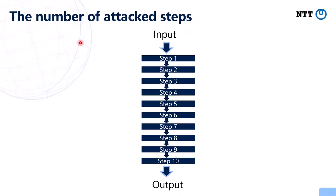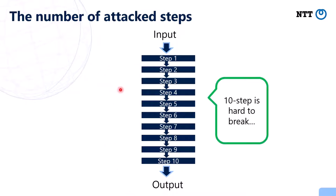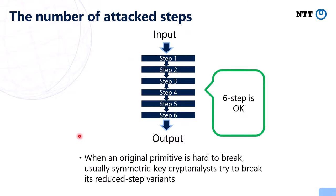Next, I would like to explain about the number of attacked steps. Usually, a hash function is made from a smaller primitive such as a compression function or permutation. Such a compression function or permutation iterates many steps. Suppose a compression function iterates 10 steps. Then it is very hard to find a valid collision attack on an ordinary primitive.